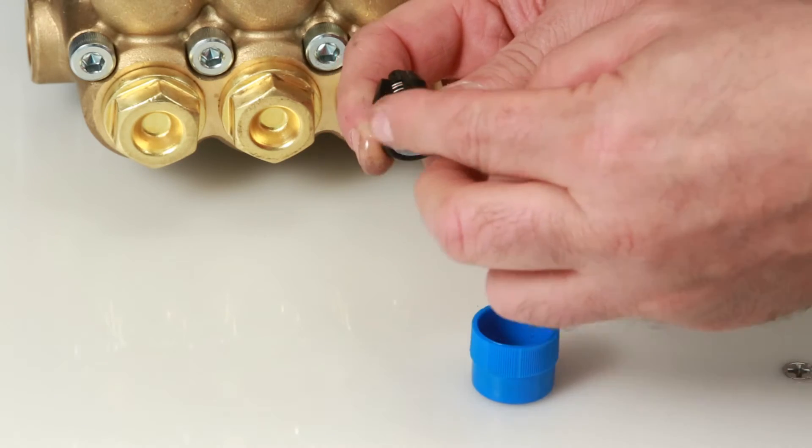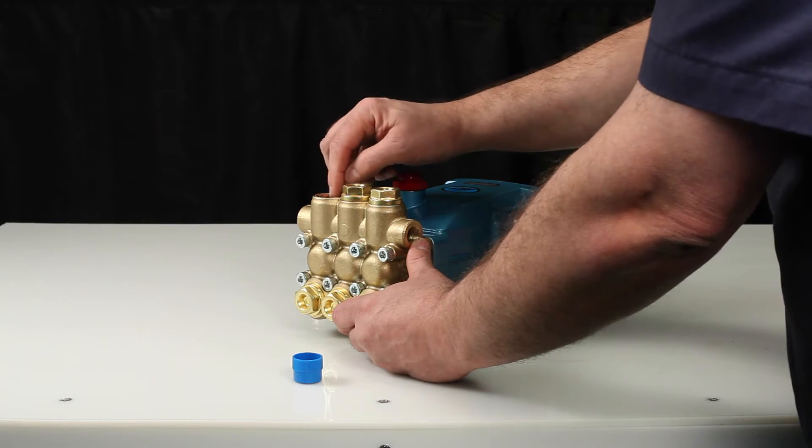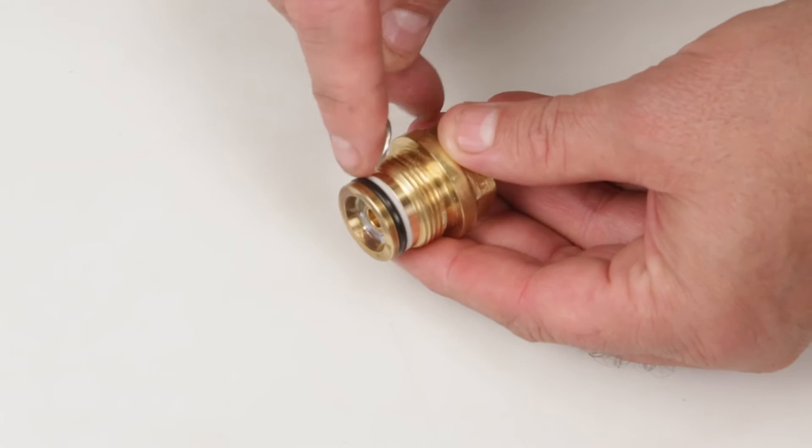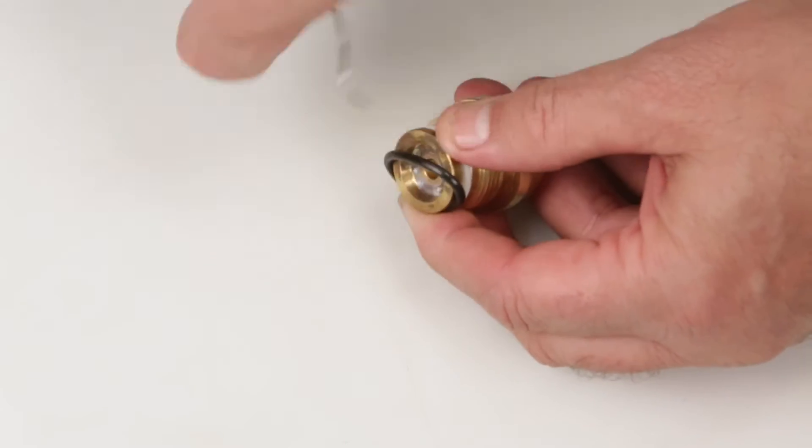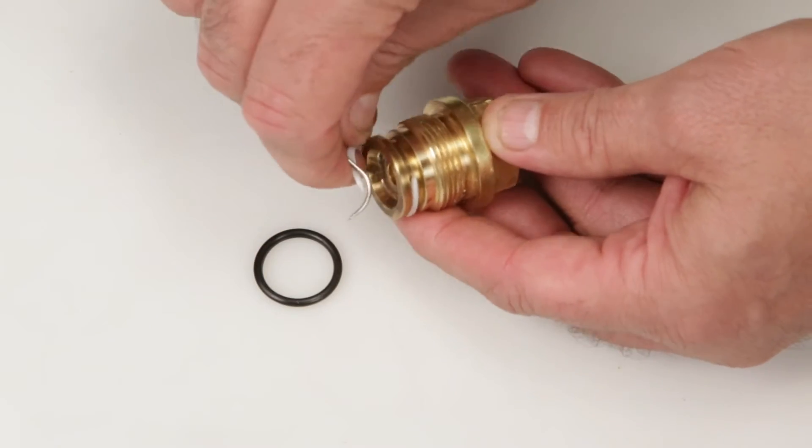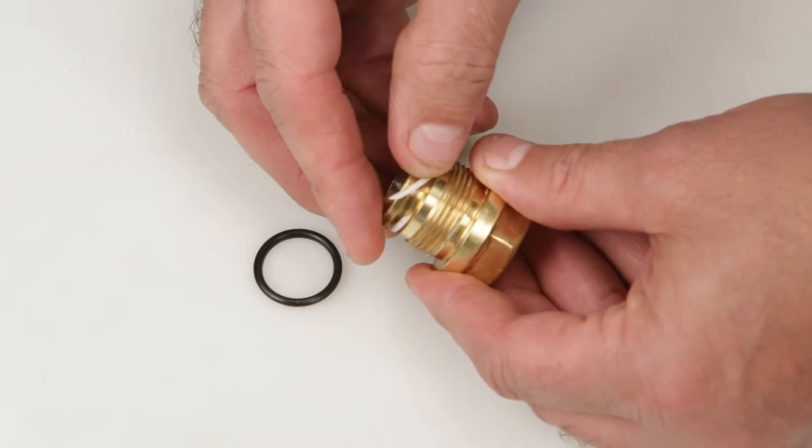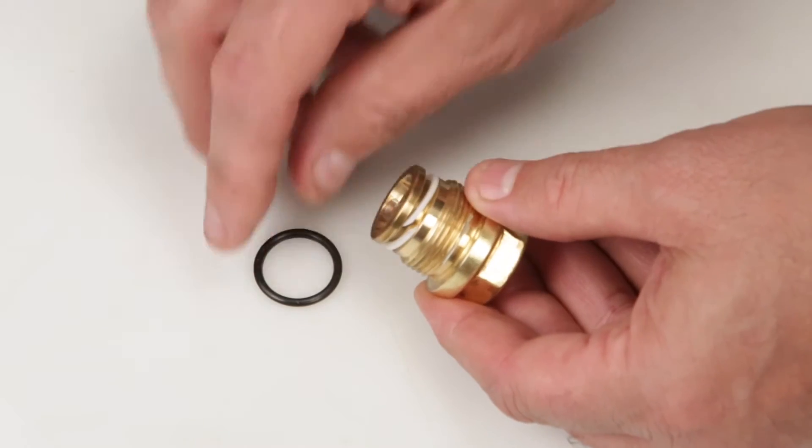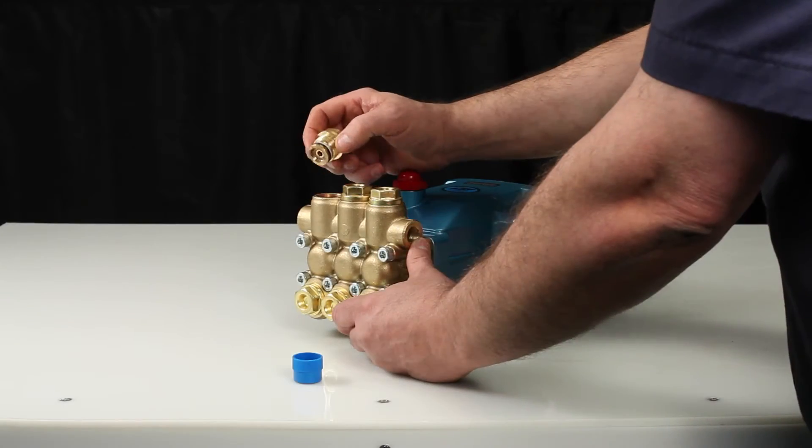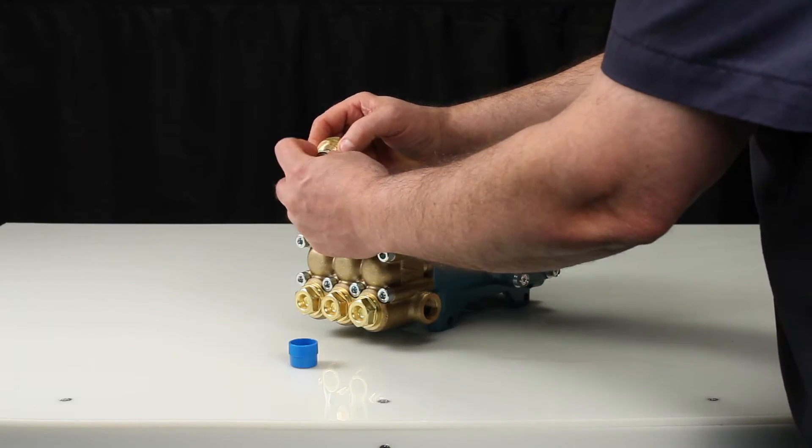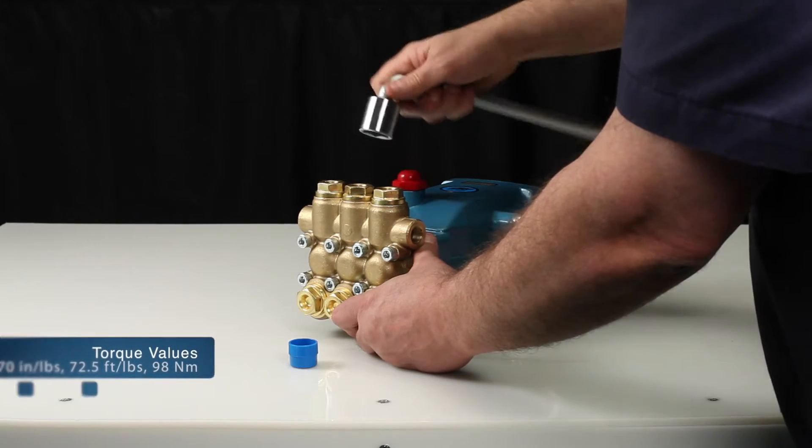Before installing the new valve assembly, lubricate the O-ring on valve seat. Next, insert valve assembly into manifold and press into place. Before reinstalling the valve plug, using a small screwdriver or pick, replace the O-ring and backup ring provided in the valve kit. Lubricate the O-ring and reinstall the valve plug. Torque to specification.